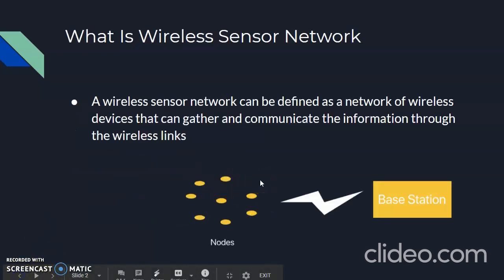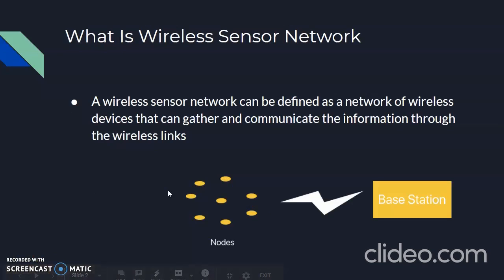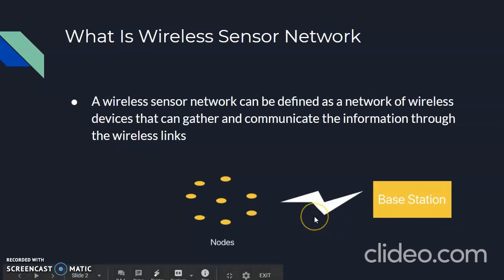Look at the image. These are the wireless sensor nodes. These nodes can sense the environment and the sensed information can be gathered, processed, and transmitted through wireless links.